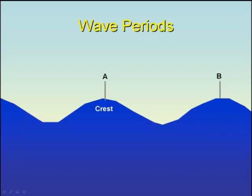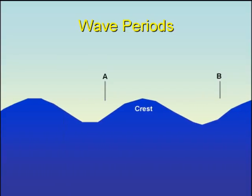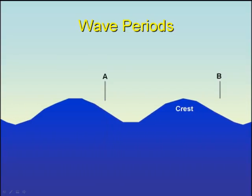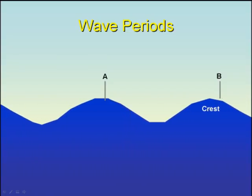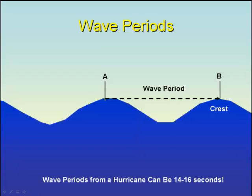Wave period is the amount of time elapsed from one wave crest to the next. Wave periods in an average hurricane can be 14 to 16 seconds.